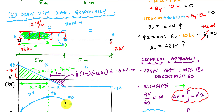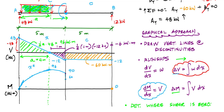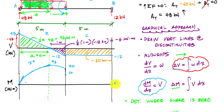Applying the change in moment equals area under the shear diagram again: I have a negative area of negative 12 times 5, which is negative 60 kilonewton-meters, taking us down to zero. Because my shear diagram is constant, the moment diagram is one antiderivative away, making it linear. I draw a straight line connecting the dots, and that is my moment diagram. That is how you draw the shear and moment diagram graphically. Let me know if you have any questions in the comments below. Take it easy — Structure Free.